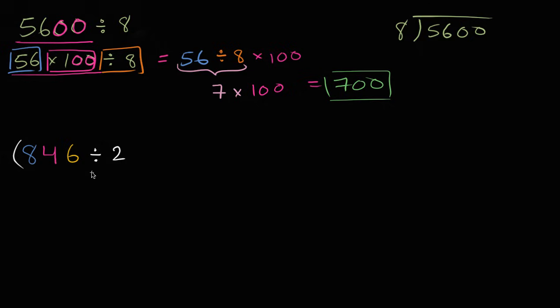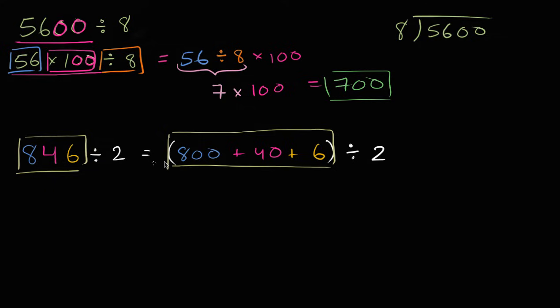846 is the same thing as 800 plus 40 plus 6, and so 846, the same thing as 800 plus 40 plus 6, and so we can just divide that by 2. We can just divide that by 2. So notice, didn't do anything too fancy here, this is just the same thing as this over here, and I just broke it up. You have 800s, 4 tens, which is 40, and 6, and you can divide that by 2.